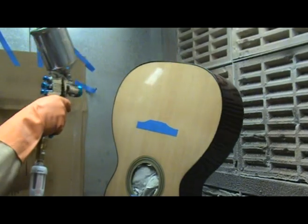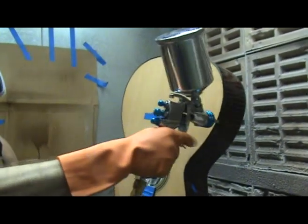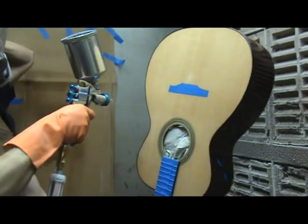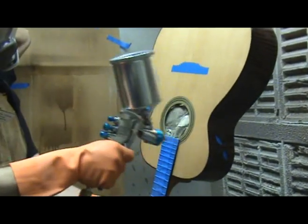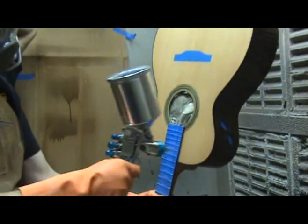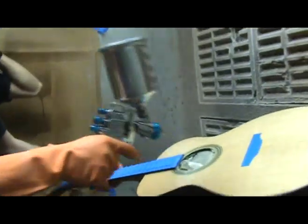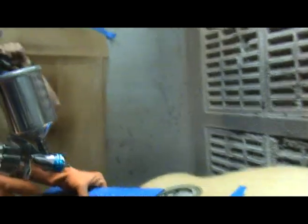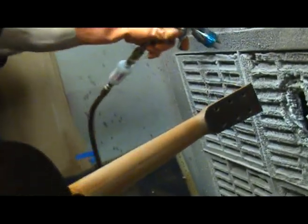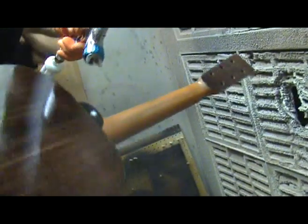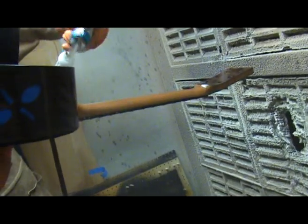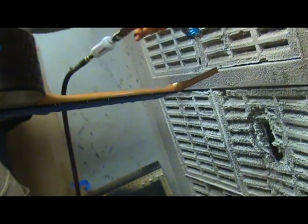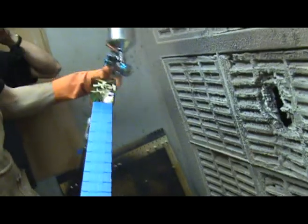Next, I spray the top. Notice that I have placed a sponge with newspaper over it in the sound hole so that the finish doesn't get into the guitar. Now comes the fun part. I hold the guitar through the sound hole with my right hand and spray the neck with my left hand. This can take a bit of practice and you need to be careful to not touch the wet finish around the sound hole as you hold the guitar.